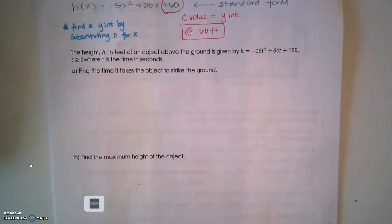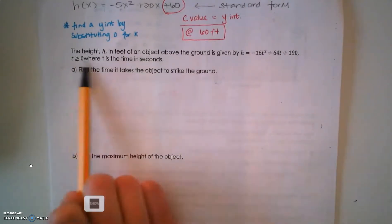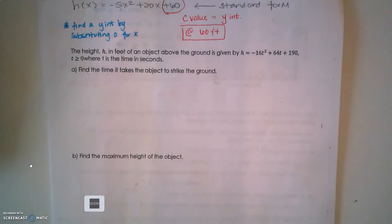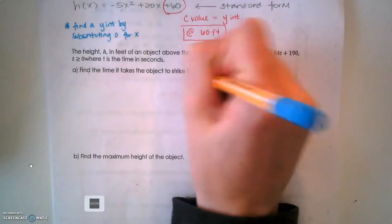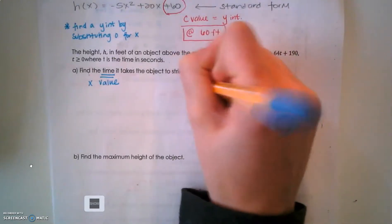Let's try another example. The height h in feet of an object above the ground is given by this equation where t is greater than or equal to 0, where t is time in seconds. Remember, time can't be negative. Find the time it takes for the object to strike the ground. Here I see where it strikes the ground, and I see time. Time is an x value, and when I see the word 'ground,' I'm solving for an x-intercept.